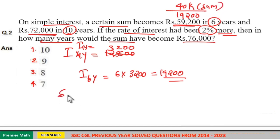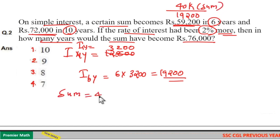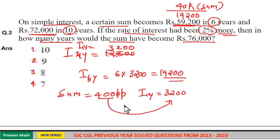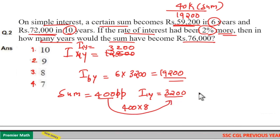Sum equals Rs. 40,000 and interest in 1 year equals Rs. 3,200. Here, 10% of 40,000 is 4,000, and 1% is 400. So 400 times 8 equals 3,200, which means 8% of 40,000 is Rs. 3,200. So the rate is 8%.